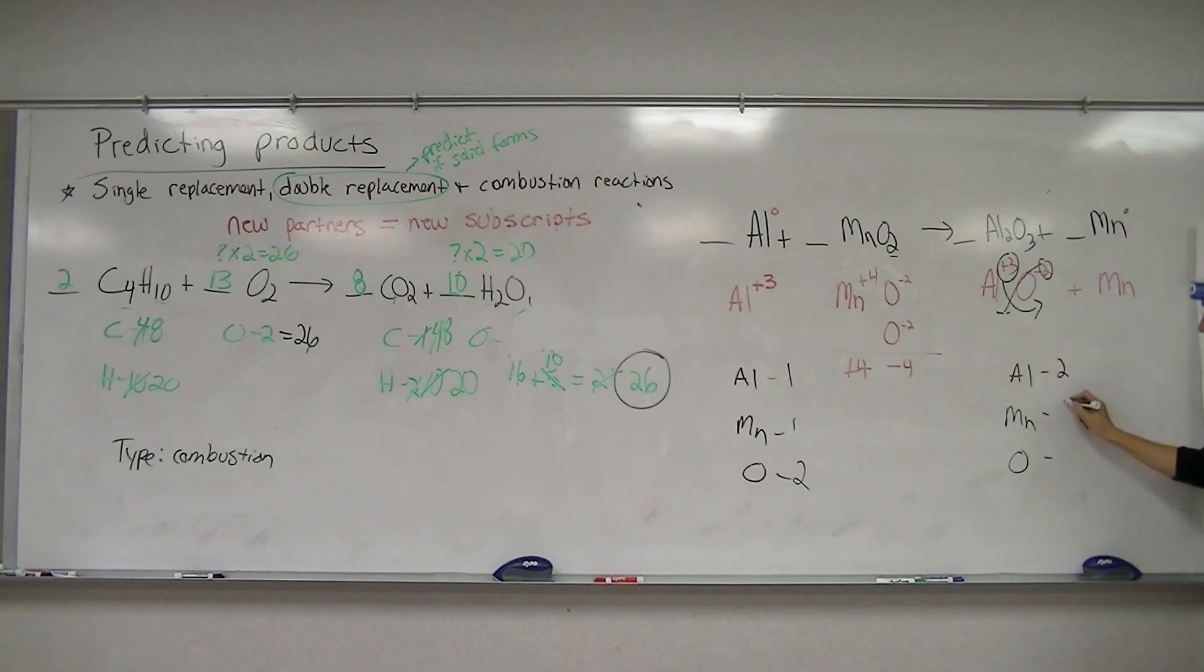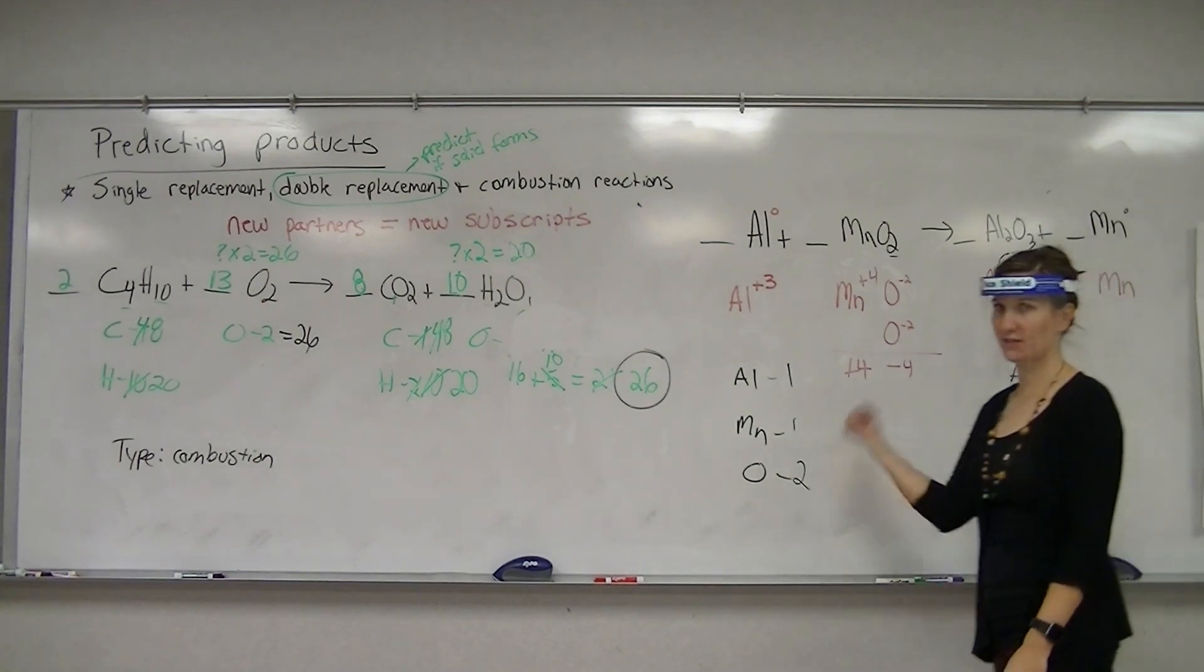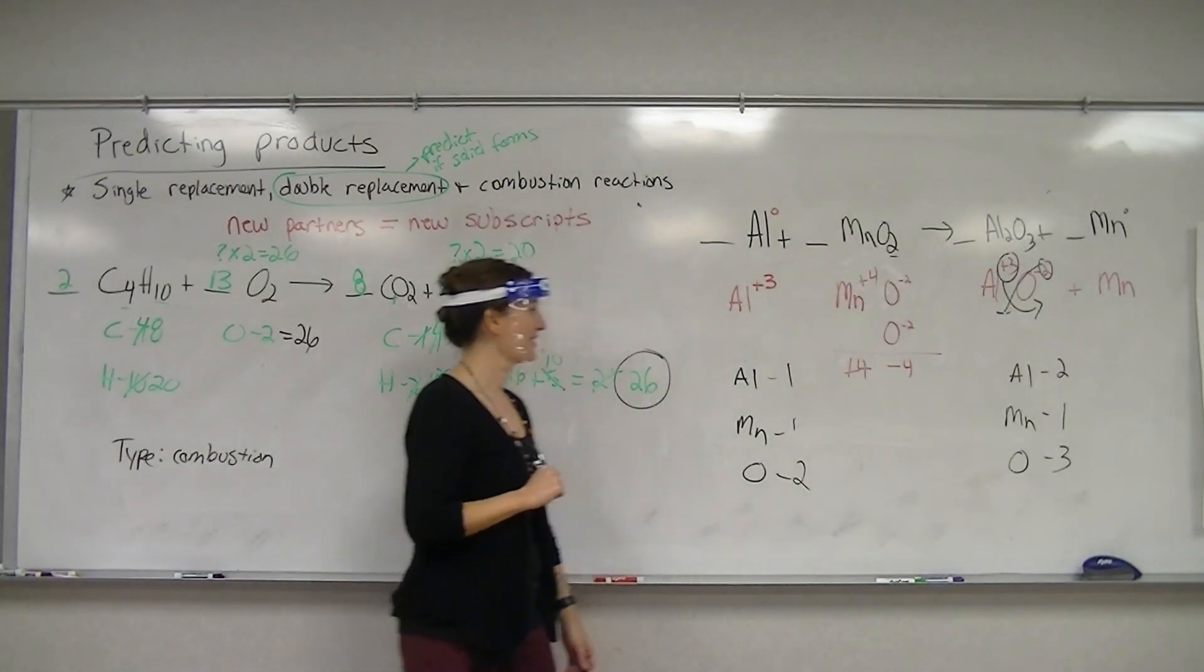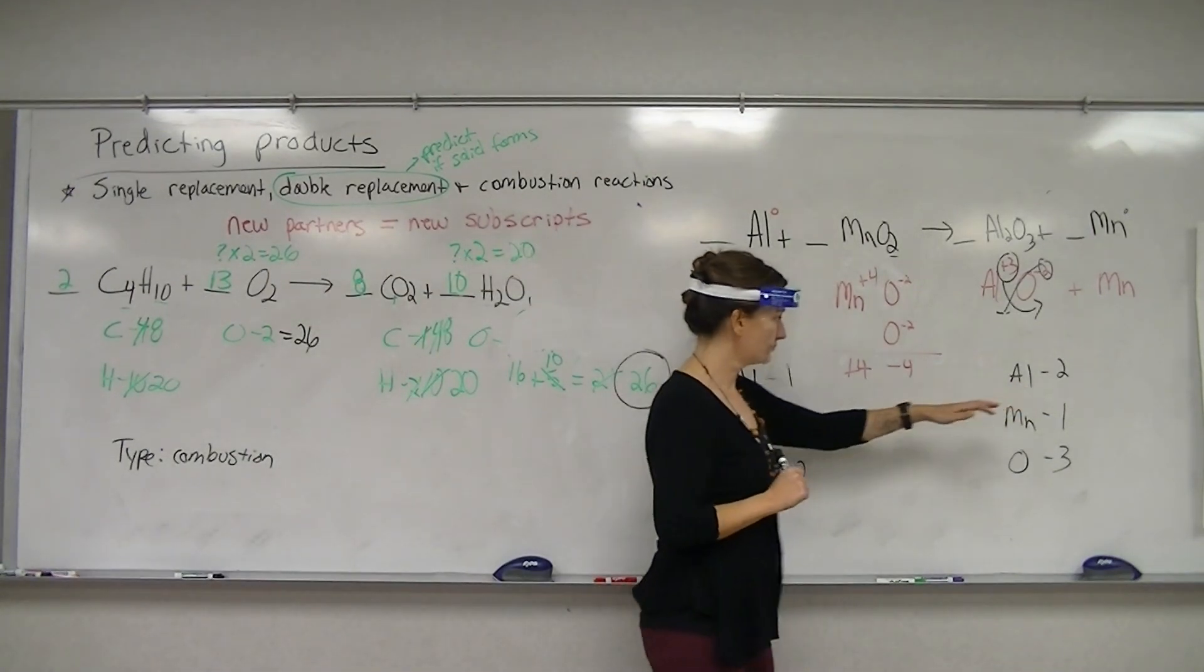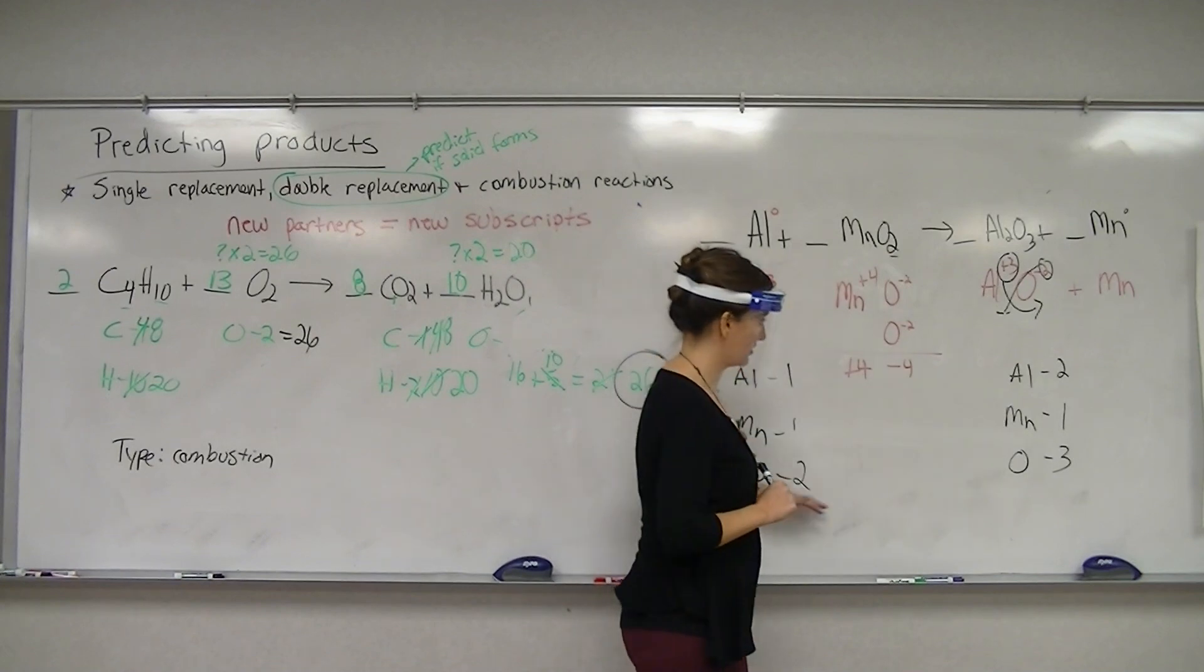Two manganese, just one again, and then oxygen is three. So our oxygens are going to be our trouble again. So notice aluminums aren't balanced, manganese are balanced, the oxygens are not.